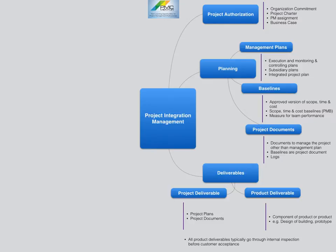The next key concept is deliverables. A deliverable is defined as any unique and verifiable product, result, or capability to perform a service that is required to be produced to complete a process, phase, or project. Project deliverables include project management plans and project documents, while examples of product deliverables are designs of a building, prototype, assembly of engine, etc.